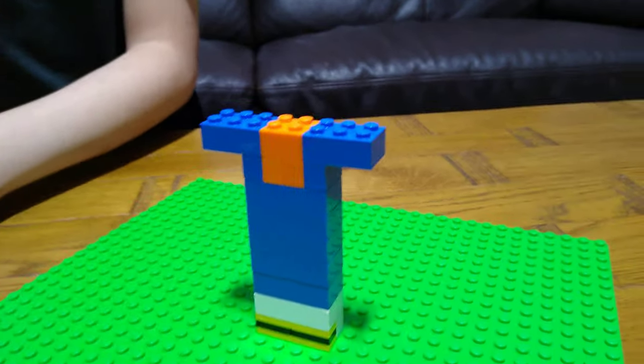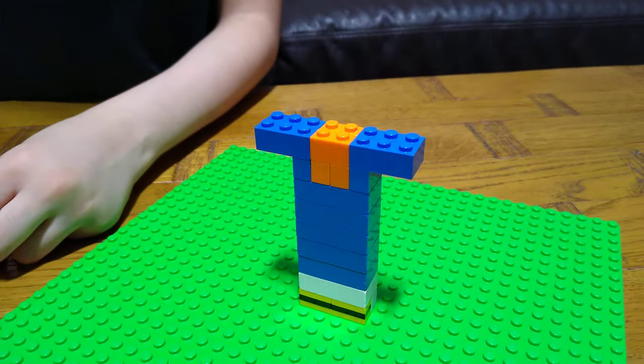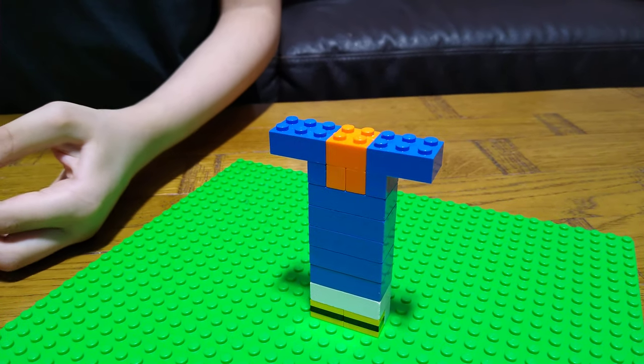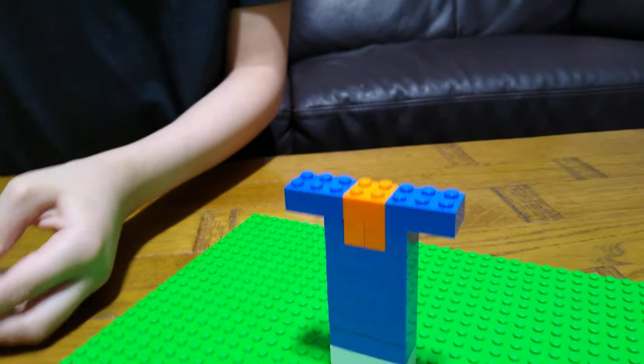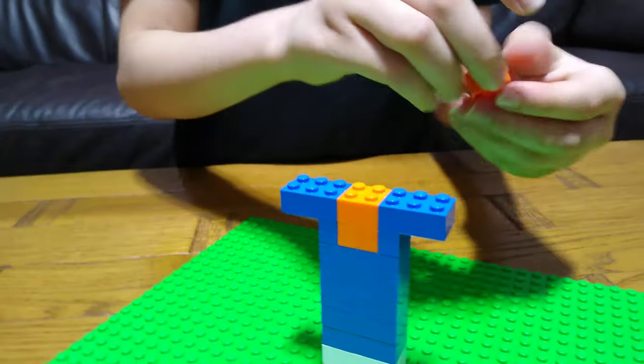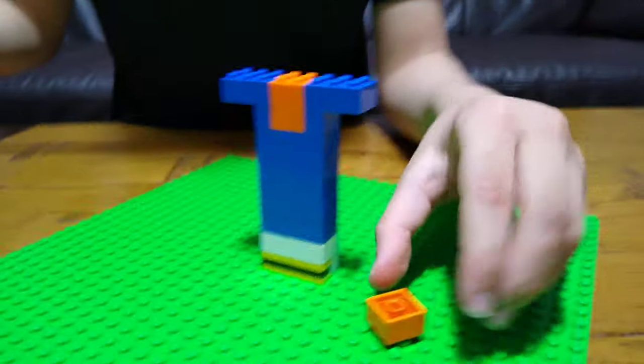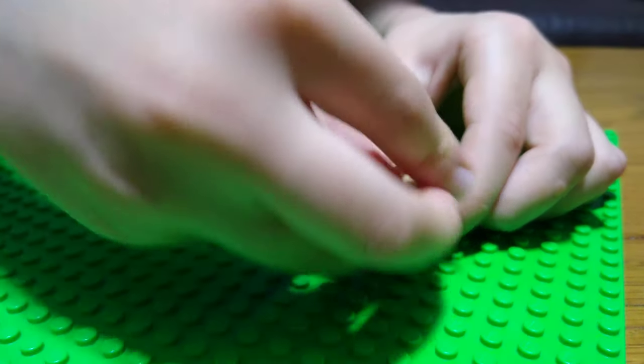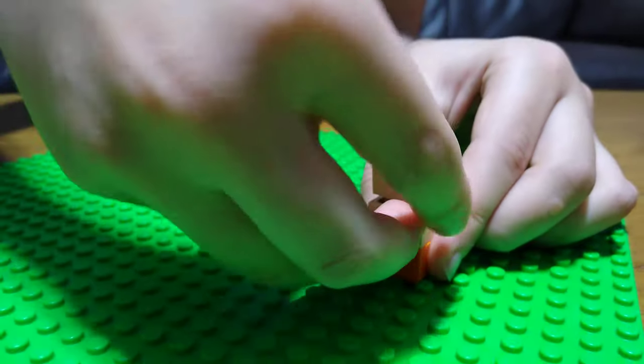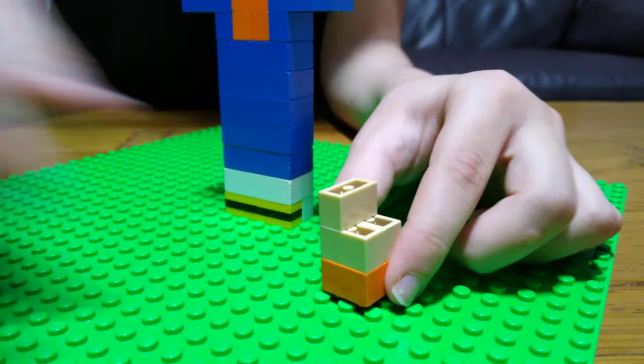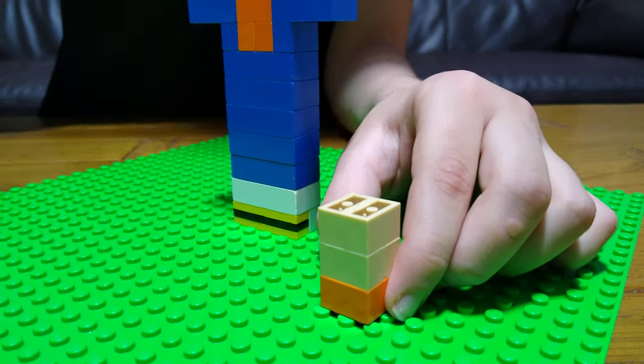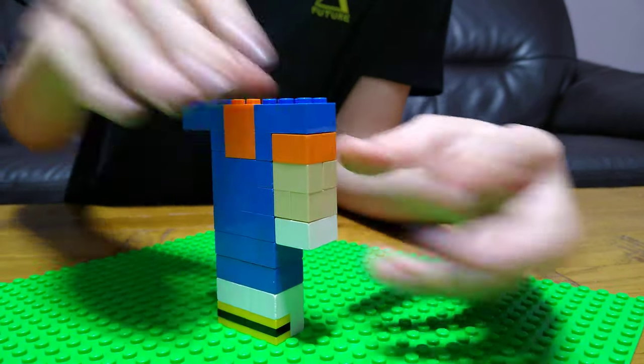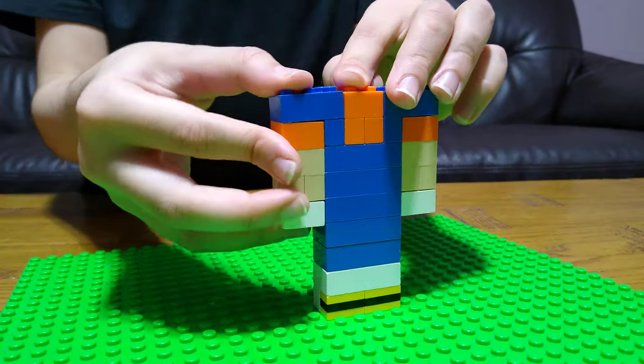These are for the arms. So for the hand you're going to need one of these, and then put this under here, then another one.